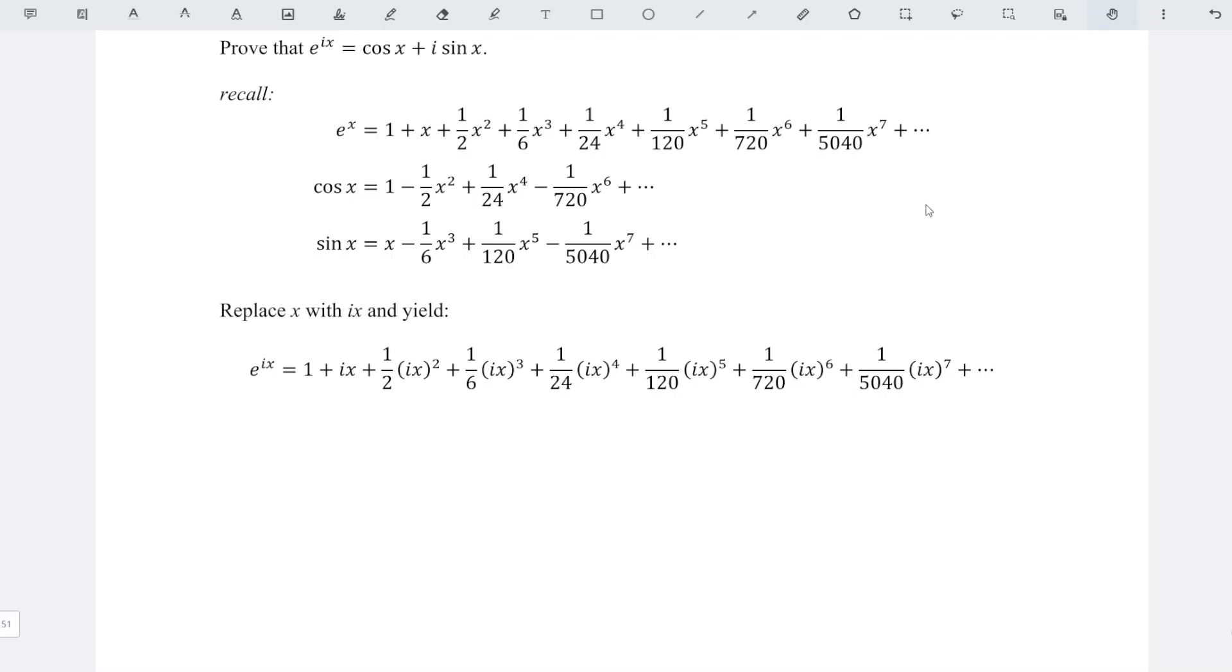And we know that for the imaginary number, i to the power of 1 is i itself, i to the power of 2 (i squared) is negative 1, i to the power of 3 is equal to negative i, and i to the power of 4 is positive 1.